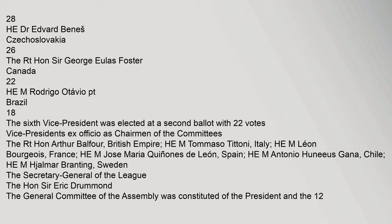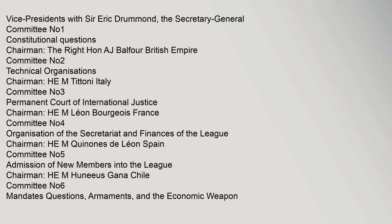The General Committee of the Assembly was constituted of the President and 12 Vice-Presidents, with Sir Eric Drummond as Secretary-General. Committee No. 1 — Constitutional Questions, Chairman: The Right Hon. A.J. Balfour, British Empire. Committee No. 2 — Technical Organizations, Chairman: M. Tittoni, Italy. Committee No. 3 — Permanent Court of International Justice, Chairman: M. Léon Bourgeois, France. Committee No. 4 — Organization of the Secretariat and Finances, Chairman: M. Quinones de Leon, Spain. Committee No. 5 — Admission of new members, Chairman: M. Hunnius Ganna, Chile. Committee No. 6 — Mandates questions, armaments, and the economic weapon, Chairman: M. Branting, Sweden.